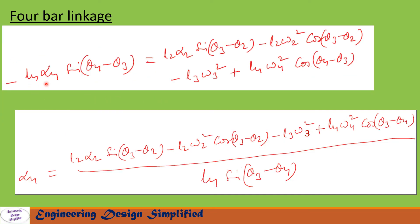Separating the L4·α4 term and moving to the left-hand side, we get −L4·α4·sin(θ4−θ3) equal to the remaining terms. Moving the two sides and noting that sin(θ4−θ3) written as sin(θ3−θ4) makes the negative sign positive, the final equation is: α4 = [L2·α2·sin(θ3−θ2) − L2·ω2²·cos(θ3−θ2) − L3·ω3² + L4·ω4²·cos(θ3−θ4)] / [L4·sin(θ3−θ4)]. This is the equation to find angular acceleration of follower link α4.